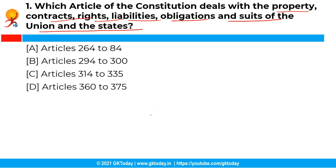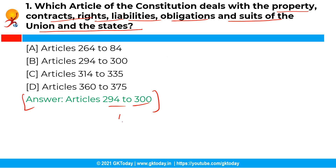The correct answer is option B, that is Articles 294 to 300. Articles 294 to 300, in Part 12 of the Constitution of India, deal with property, contracts, rights, liabilities, obligations and suits of the Union as well as the states in India.